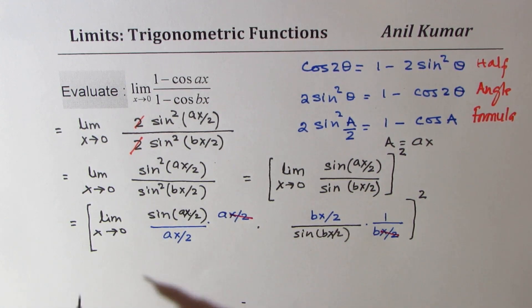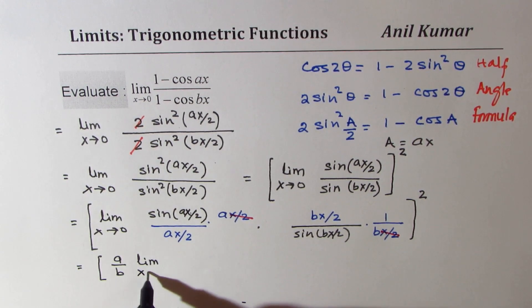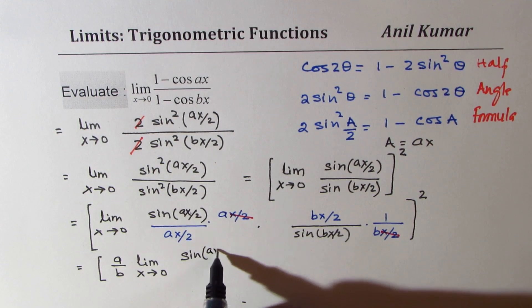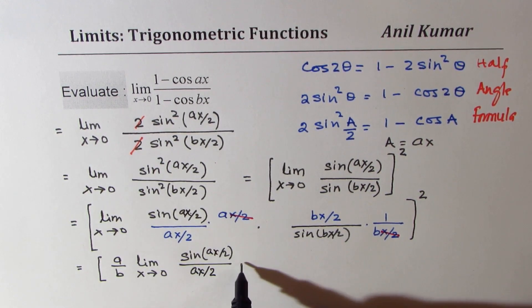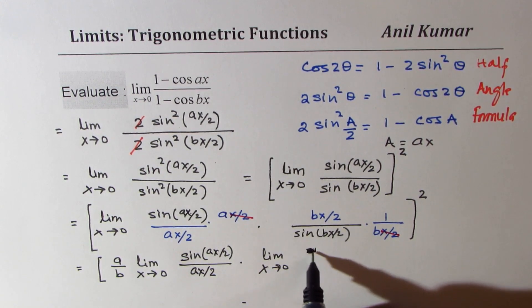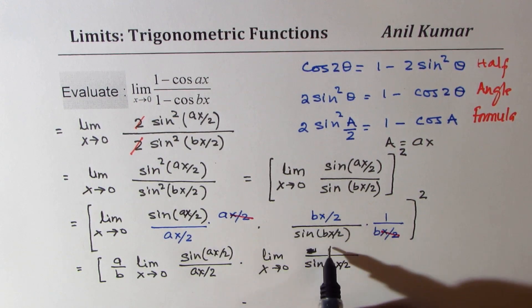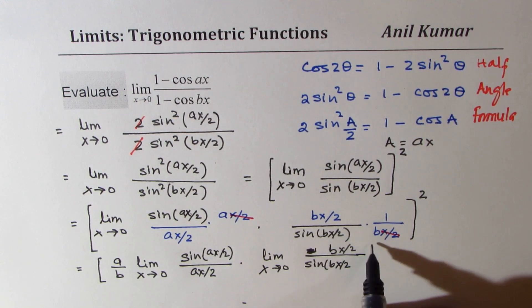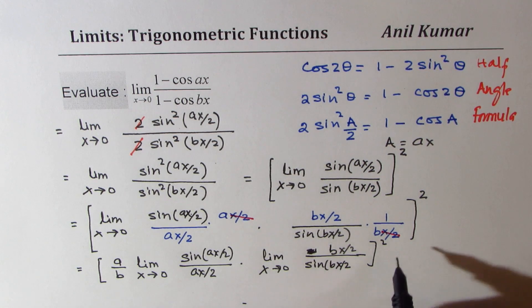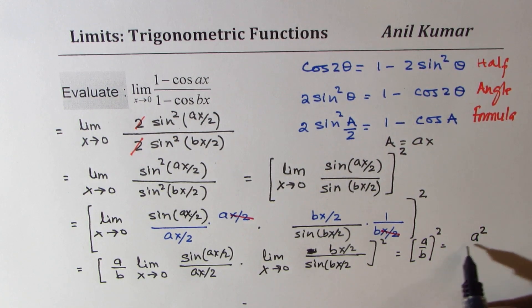We have a over b times: limit x approaches 0 of sine ax by 2 over ax by 2, times limit x approaches 0 of bx by 2 over sine bx by 2 — all squared. These limits are both 1, so we are left with a over b whole squared, or the result is a squared over b squared.